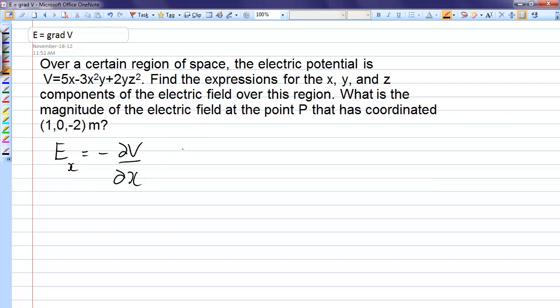In general, for three dimensions, the electric field vector is minus the gradient of the voltage, which means that you take the derivative with respect to x and it has the i-hat component, derivative with respect to y the j-hat component, and the derivative with respect to z the k-hat component.